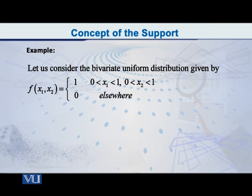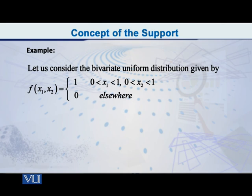So let me come to the simple example. As soon as you see the diagram that is now coming up, you will find that all of this is actually quite simple. Let us consider the bivariate uniform distribution — the simplest one — given by f(x1, x2) = 1, where x1 goes from 0 to 1 and x2 also goes from 0 to 1, and f(x1, x2) = 0 elsewhere.